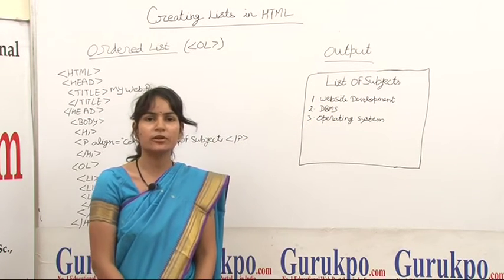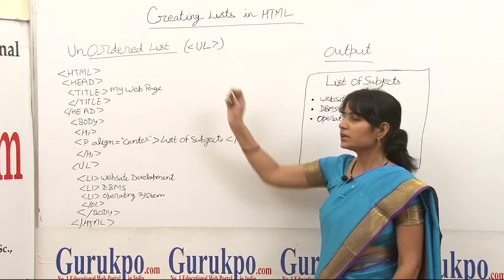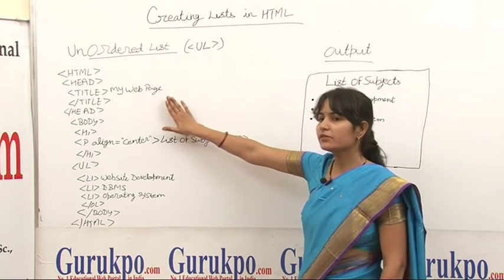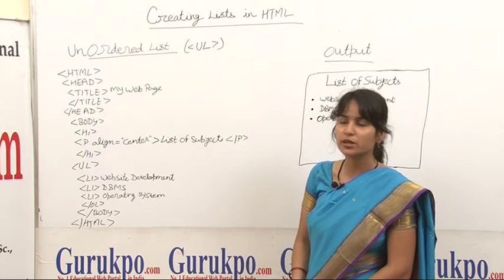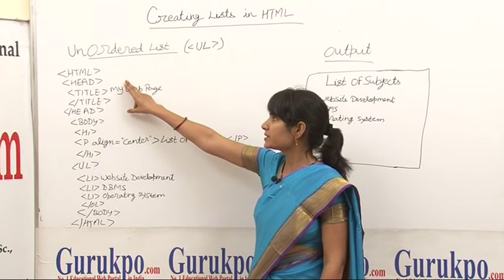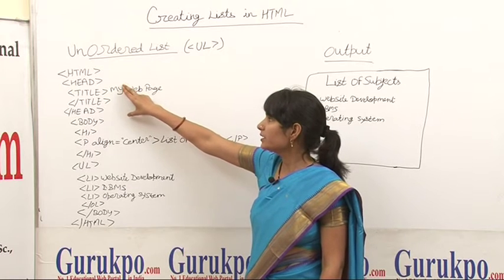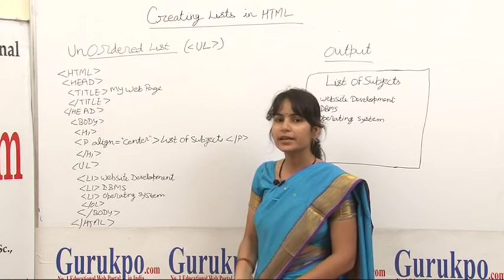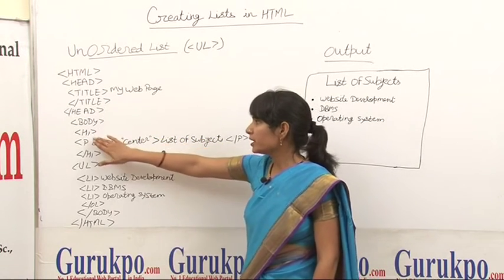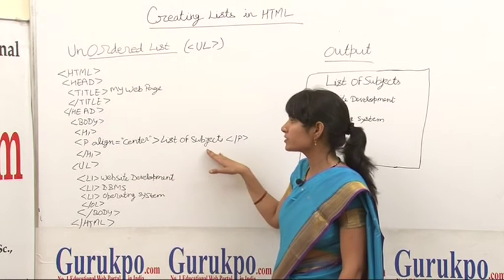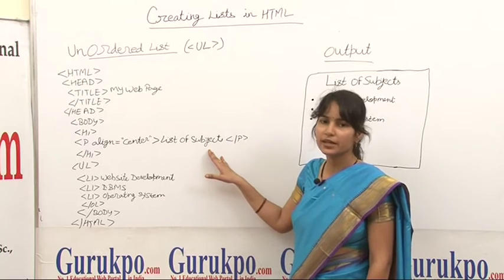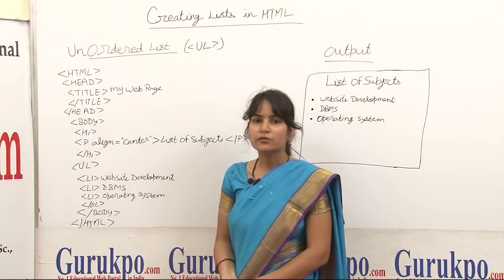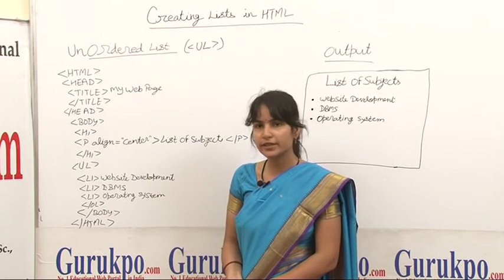Now we will discuss about the unordered list. To display items in an unordered list, that is a bulleted list, we use the UL tag. Here we again show the example of using the UL tag: start the HTML program through the HTML tag, add the heading and show the title 'my web page', close the title tag and head tag, and now come to the body tag part. We again show a heading like 'list of subjects' in heading format with center alignment. Now we close the H1 tag and start the UL tag, which is used to create an unordered list, that is a bulleted list.